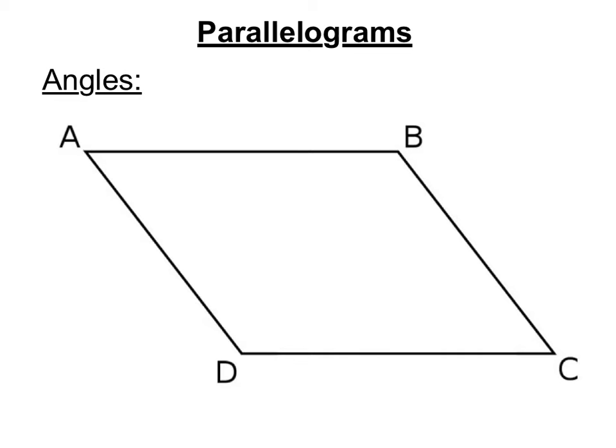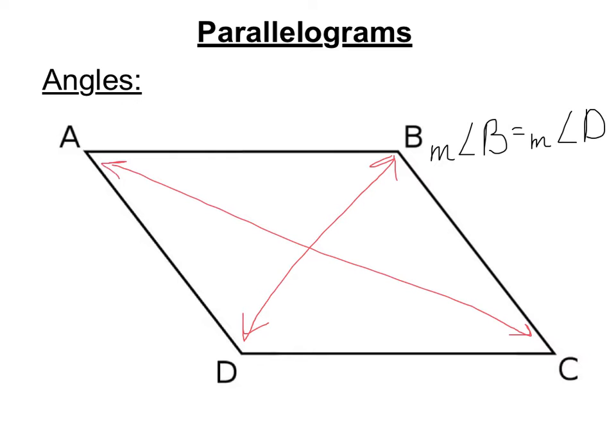When it comes to angles, there are two special properties that you're going to need to know. First, opposite angles have the same measure. So that means that angle B and angle D here have the same measure. So we can write the measure of angle B equals the measure of angle D. So if I know that this angle is 100 degrees, then I know that that angle is 100 degrees. If I know that this is 135 degrees, then I know that this is 135 degrees. And then these angles here are also opposite of each other and therefore have the same measure. So the measure of angle A equals the measure of angle C.